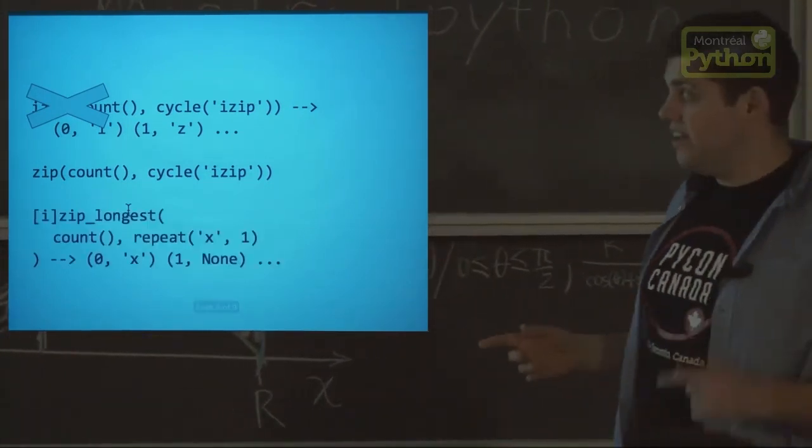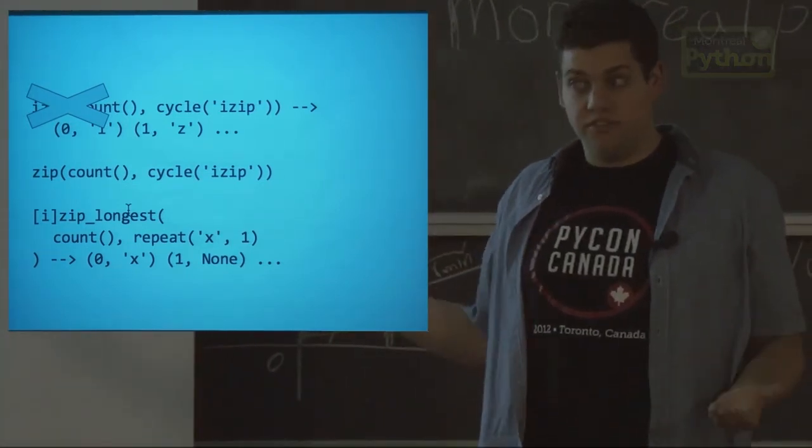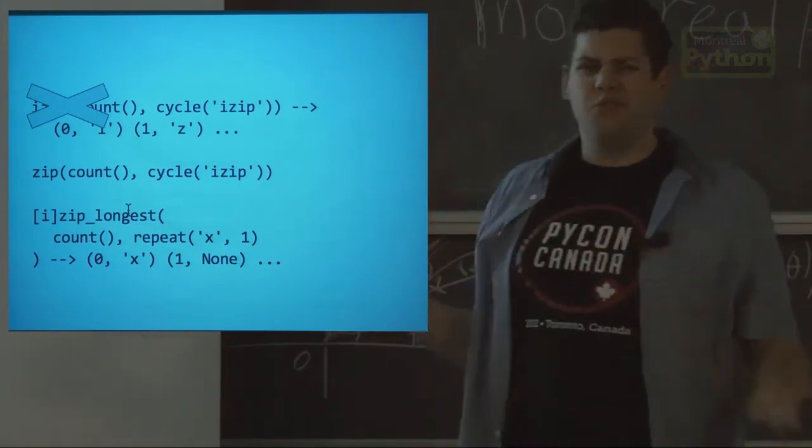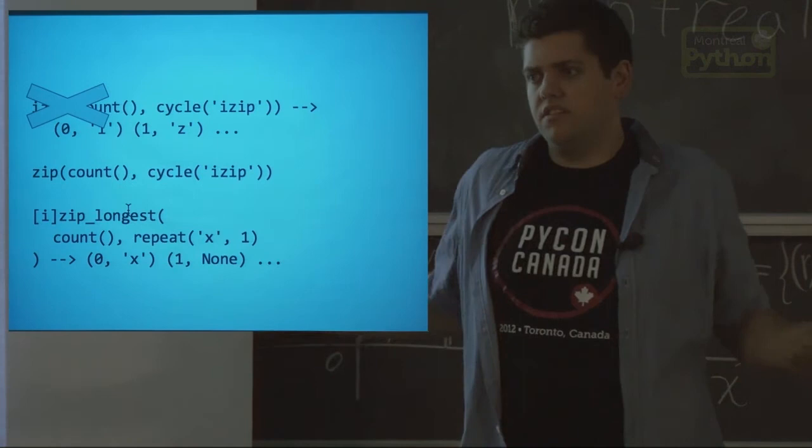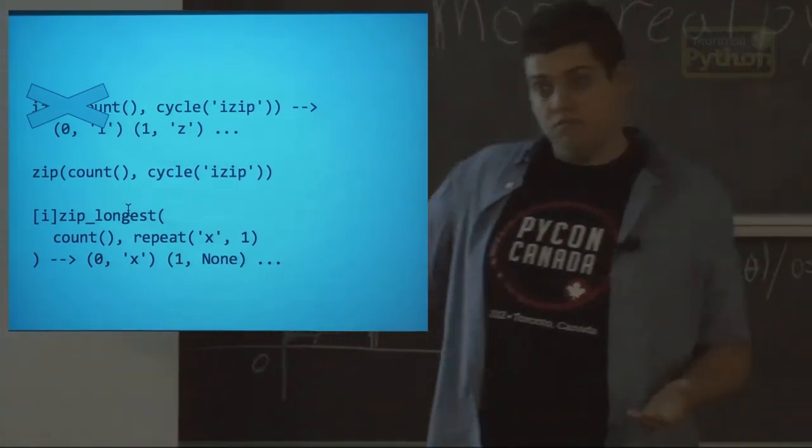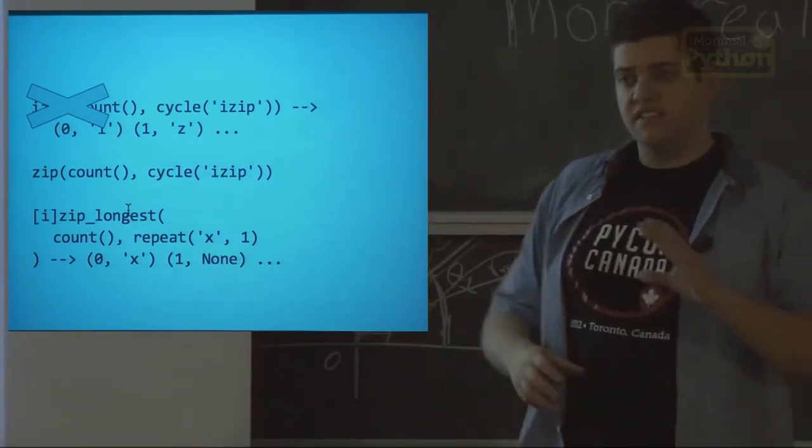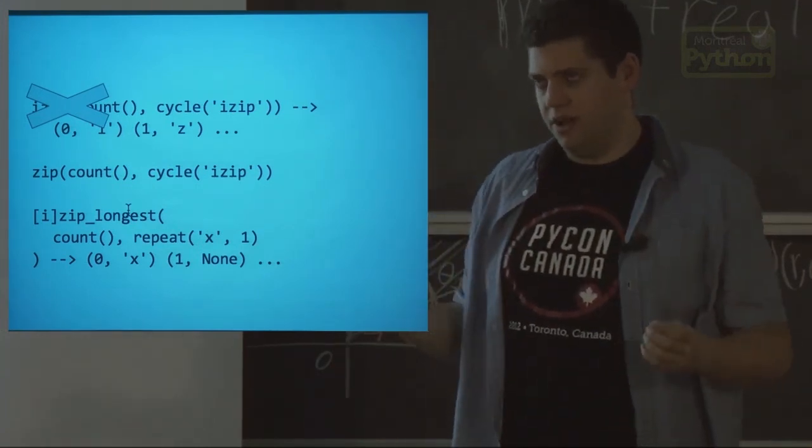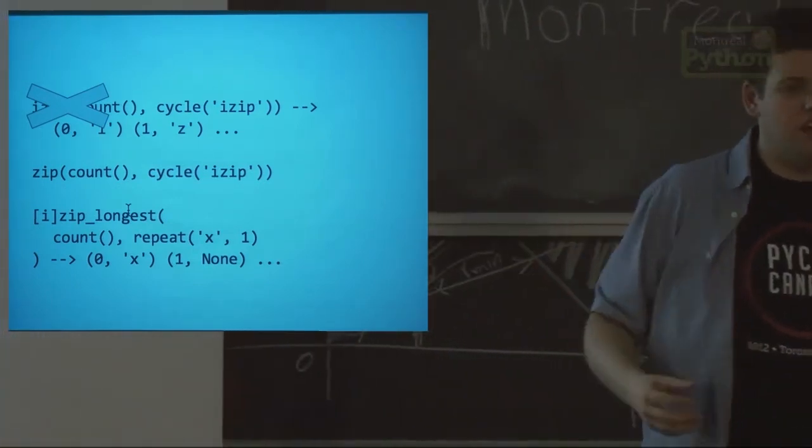However, you still get iZip in Python 2, it's iZip longest. In Python 3, it's zip longest. So zip will stop. If you get two lists of unequal length, it'll stop at the shortest one, because it doesn't know what to do afterwards. iZip longest, by default, it'll give none. It'll take the longest list, and the shortest list will continue and pass wherever the shortest list stops. It'll throw out none, or you can give it whatever you want. So if you need to fill out two lists of unequal time, then my time is over.